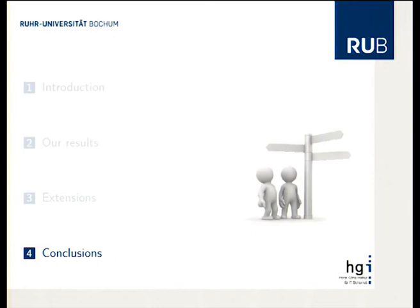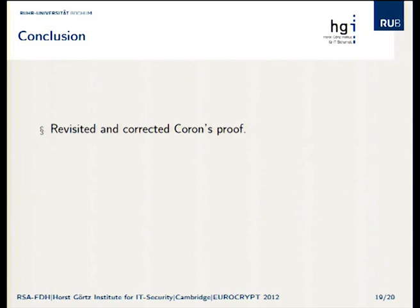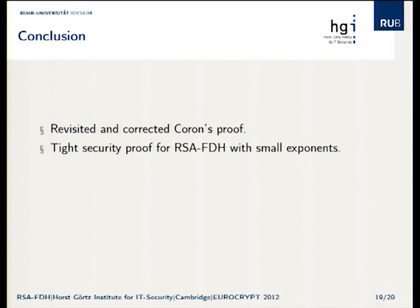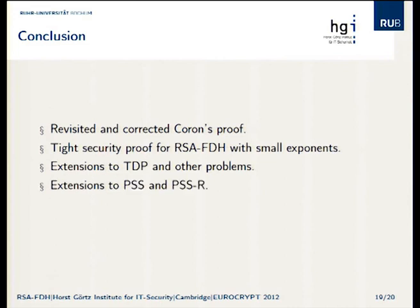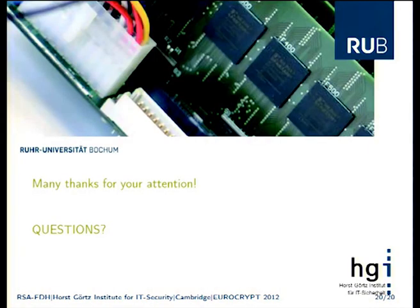To sum up: we revisited Coron's proof, found a small flaw, and corrected it. We have a tight security proof for RSA full domain hash under the phi-hiding assumption. We showed extensions to certified trapdoor permutations and some generalizations, and we have extensions to PSS and PSS with message recovery. Thank you for your attention — I'll be happy to take questions.